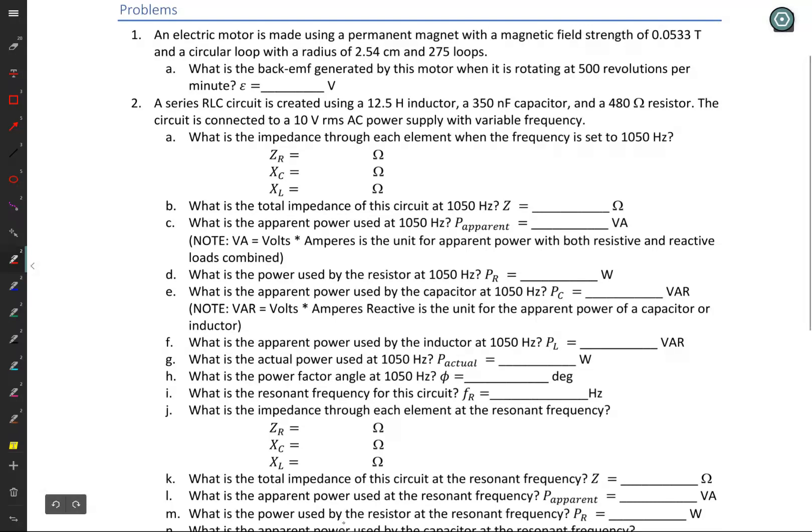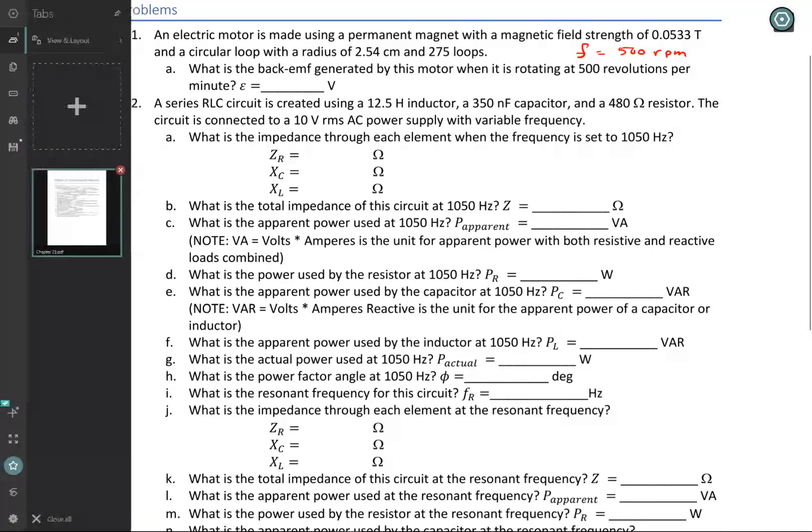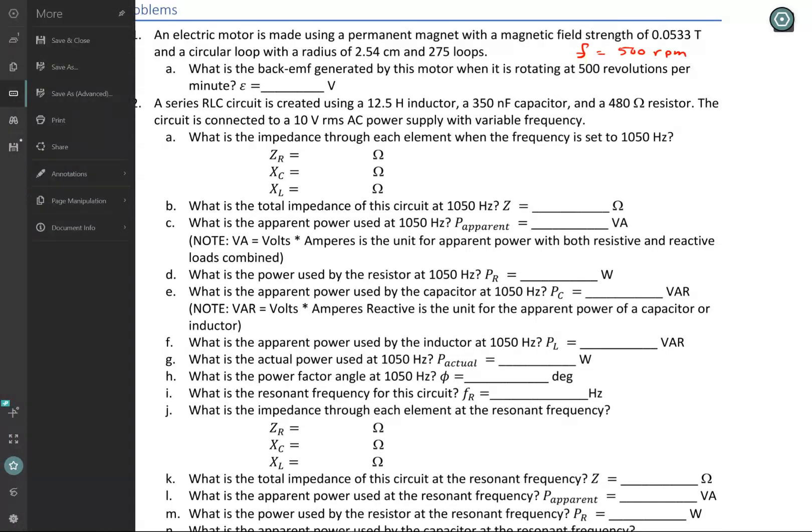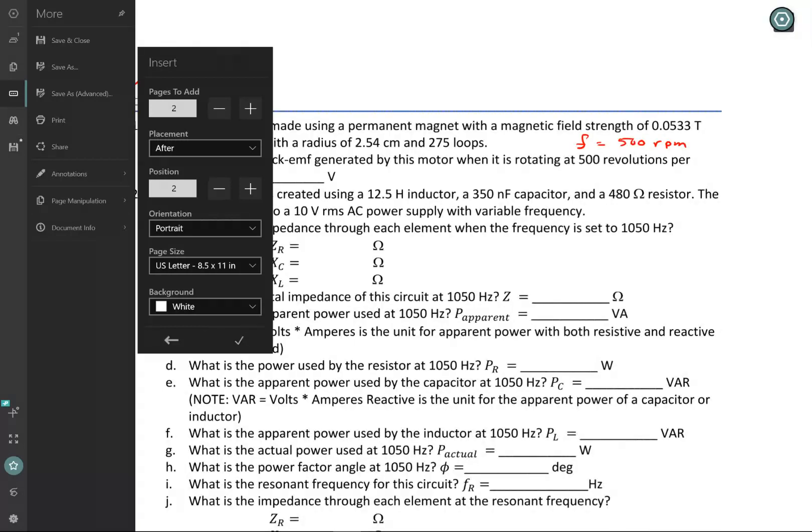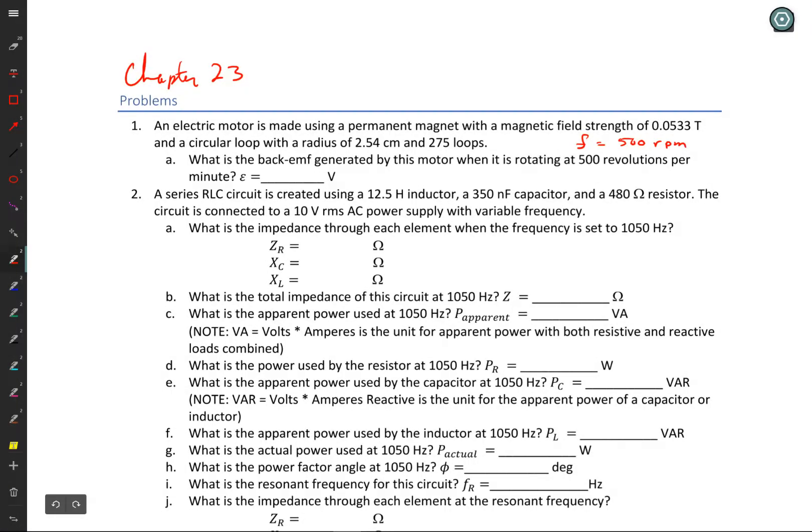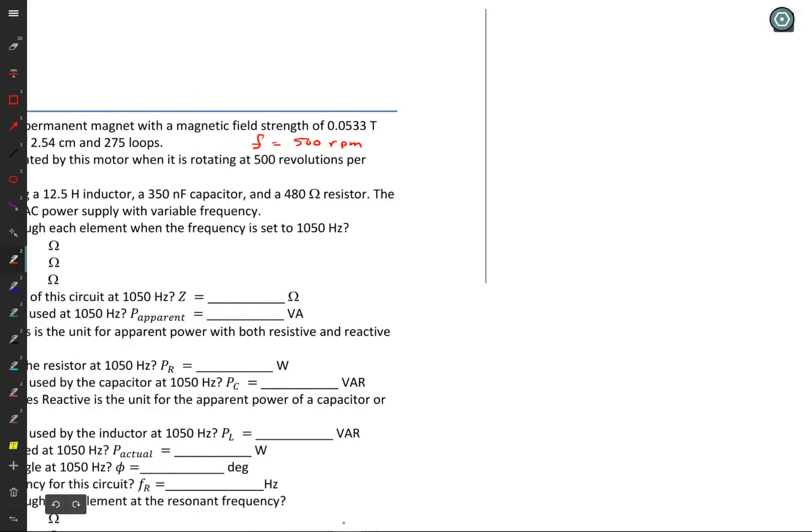So we have our frequency is 500 revolutions per minute. Now, one thing I'm going to do here is add an additional page or two. I'll put a couple in just to make sure we've got enough. And I'm going to have to move back and forth between pages as I work.